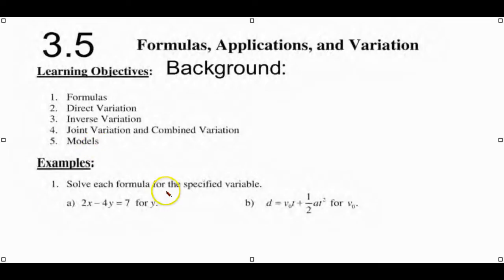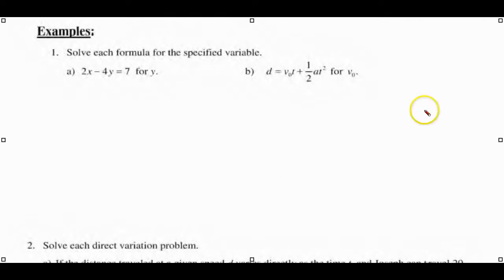To get started we'll look at solving these particular equations for a particular letter. We'll start off with writing this out nice and big, 2x minus 4y equals 7, and you're going to do this on the other side or wherever you have room.